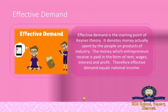The rate of interest and marginal efficiency of capital determines the investment level. The rate of interest depends on money supply and liquidity preference. Keynes gave importance to the concept of liquidity preference. Liquidity means ready cash. Liquidity preference is based on three motives: transaction motive, precautionary motive, and speculative motive.